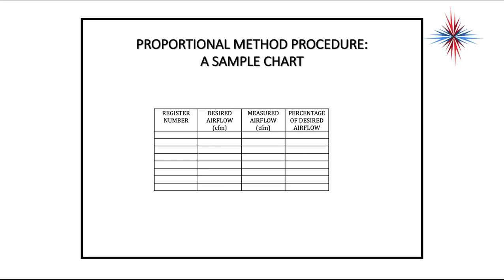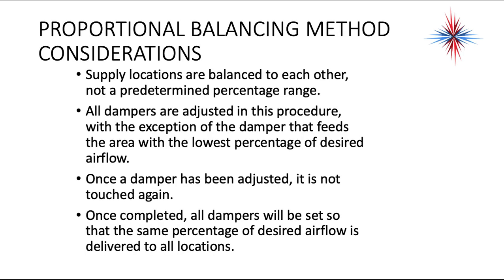It's very easy in a large construction project to not be able to find the register you're looking for. Supply locations are balanced to each other, not a predetermined percentage range. The stepwise method used plus or minus 10%; in this method, we balance the locations to each other. All dampers are adjusted, with the exception of the damper feeding the area with the lowest percentage of desired airflow. Once a damper is adjusted, it is not touched again. Once completed, all dampers will be set so that the same percentage of desired airflow is delivered to all locations, providing very accurate comfort and temperature control.